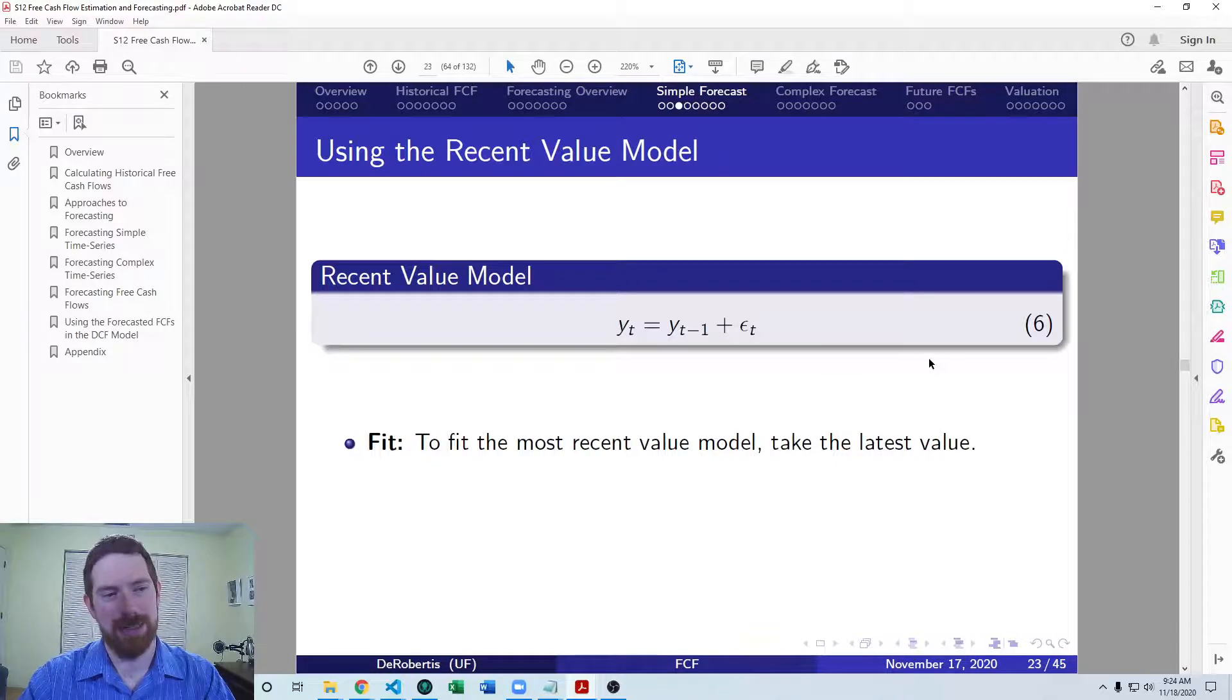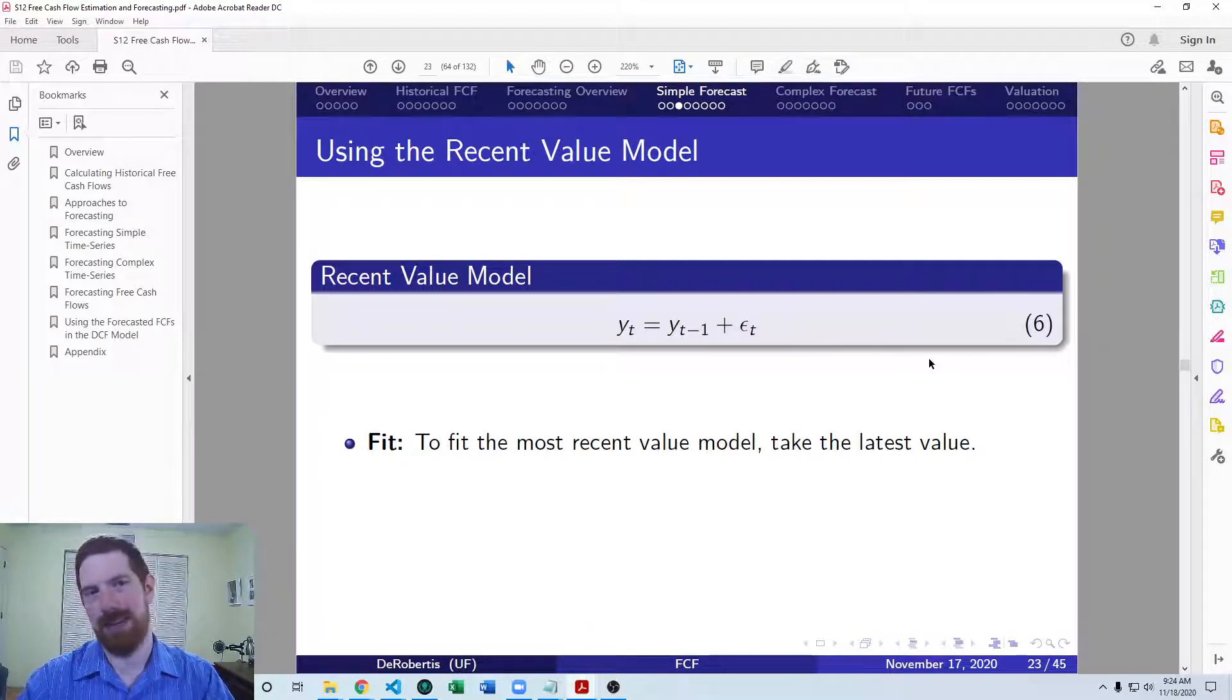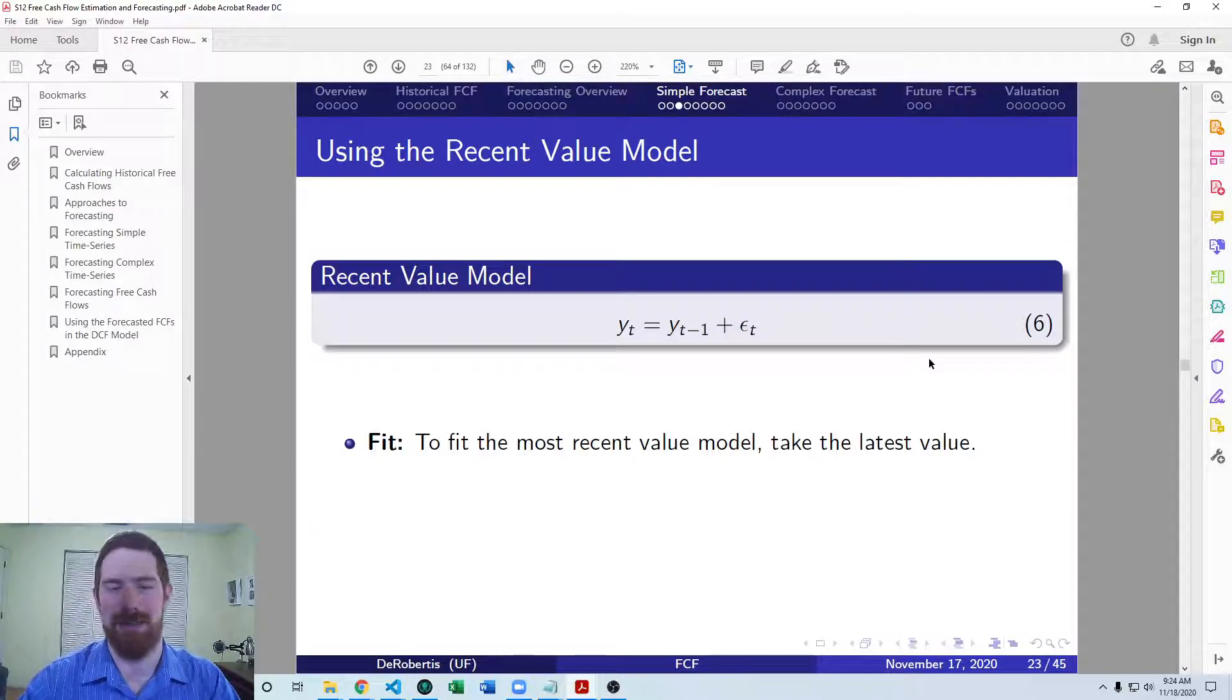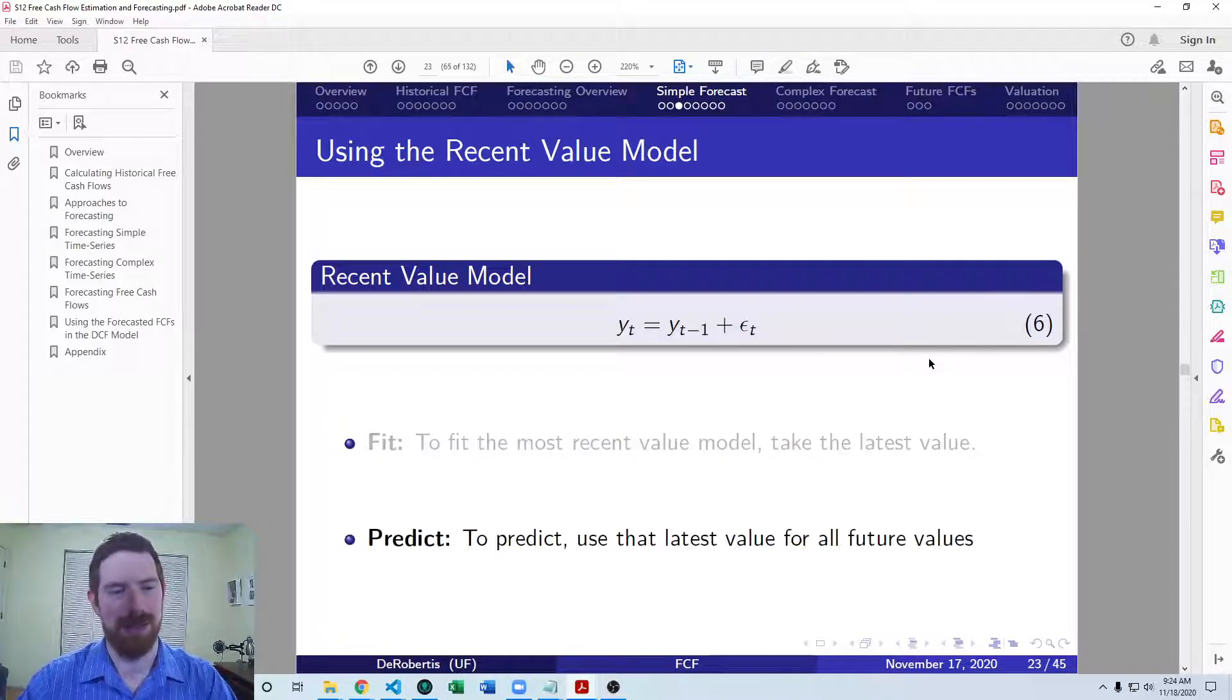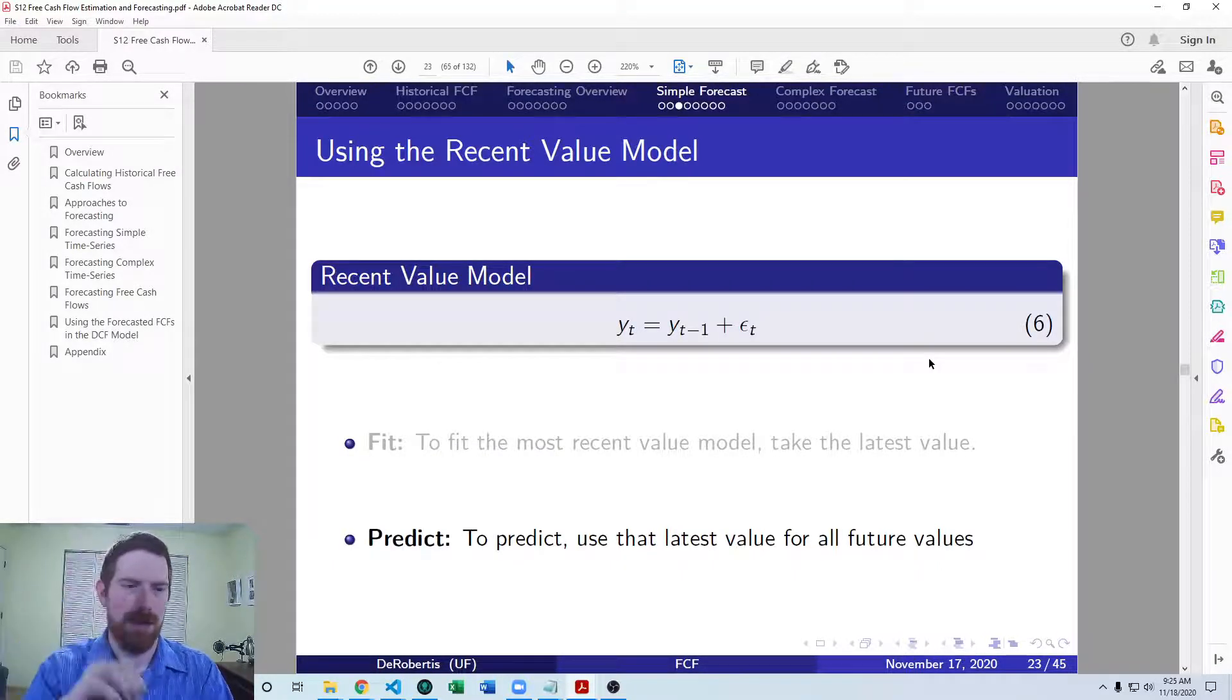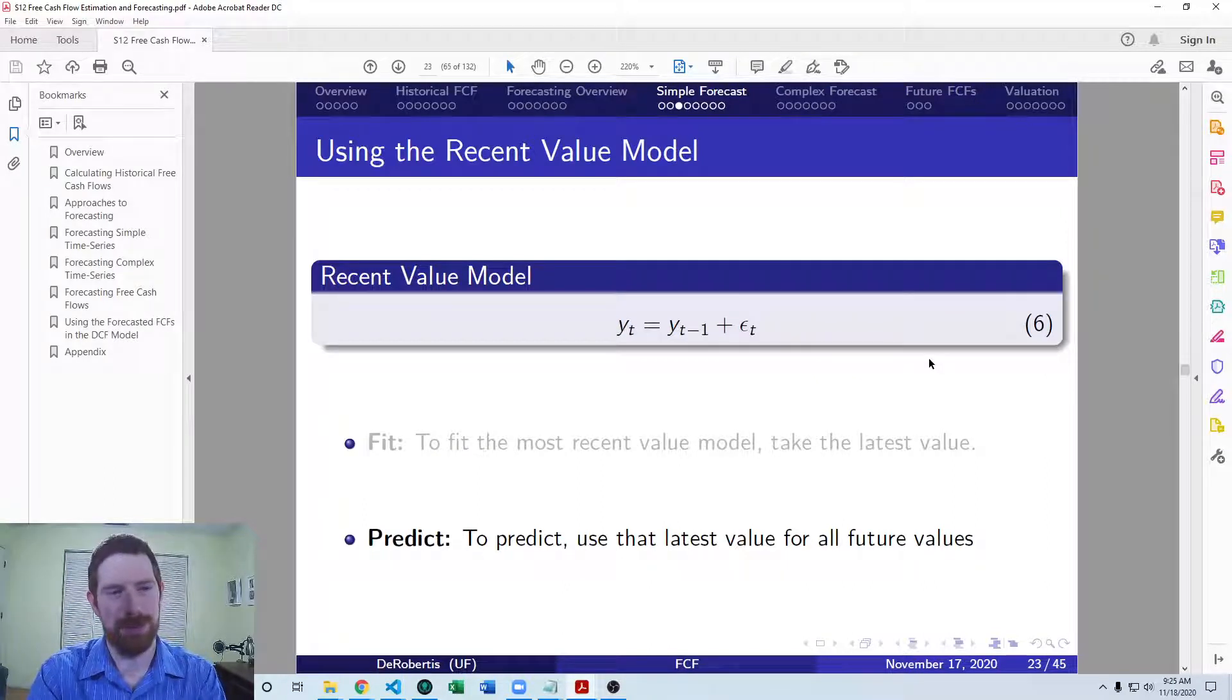The second model we're looking at is the recent value model. This is even simpler than the historical average model. Here we're just taking whatever the most recent value was and assuming that it's going to stay there in the future, and we just use that same value for all the future periods.